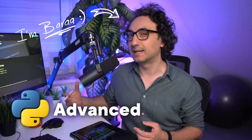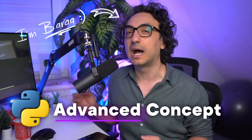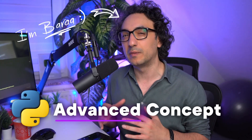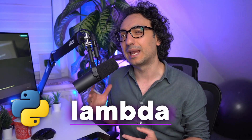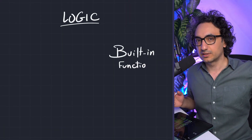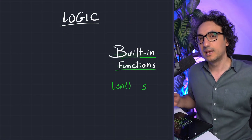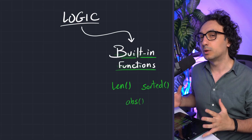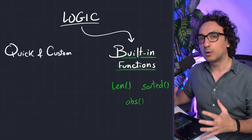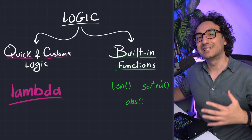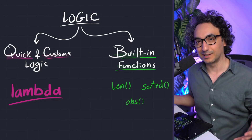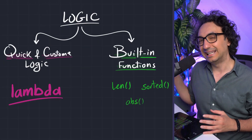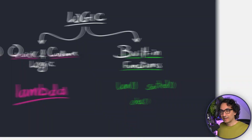Okay my friends, so now we're going to talk about another advanced concept on how to work with the data structure, the list in Python. We're going to talk about Lambda. In Python, there are a lot of built-in functions that we could use, but sometimes you want to create your own custom logic and we can use Lambda to do that. So now let's deep dive and understand this technique.